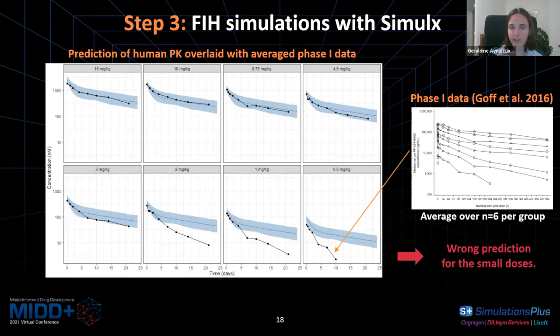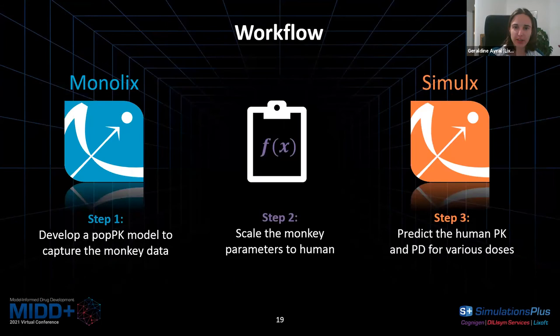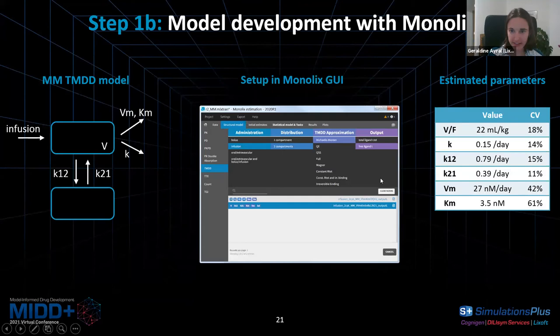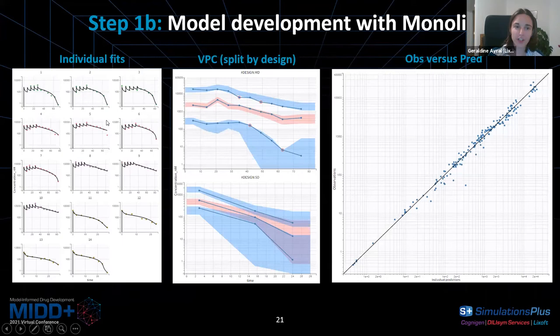Instead of a linear PK model, I switch to a nonlinear PK model with a target-mediated drug disposition (TMDD) model — adding nonlinear elimination with parameters Vm and Km to the linear elimination. The Monolix suite has a nice library of TMDD models, so I simply pick this model and run again. The estimated parameters are obtained. Looking at the individual fits, the typical TMDD shape with a downward curvature is now much better captured. The VPC and observations versus predictions plot also look better.